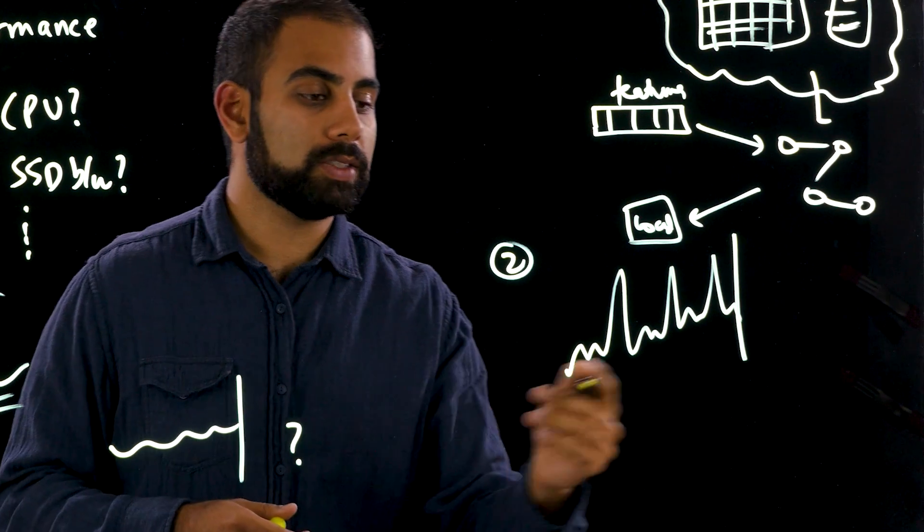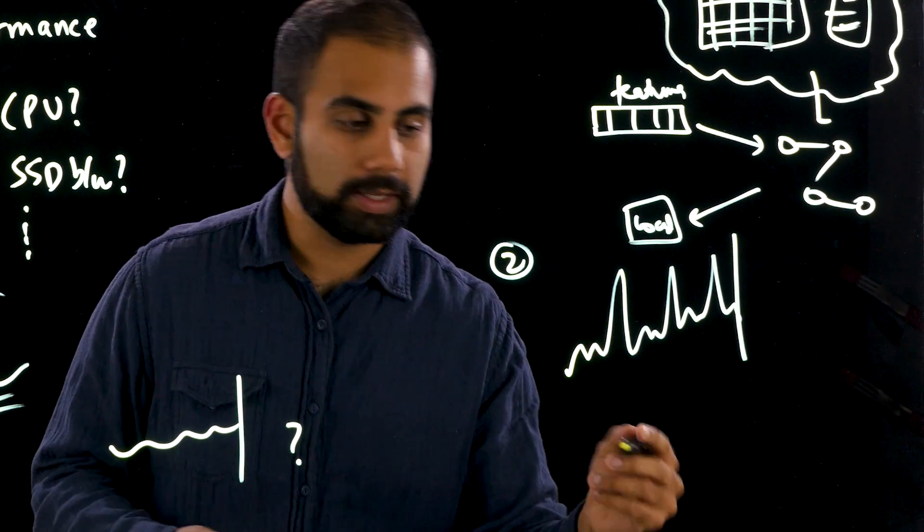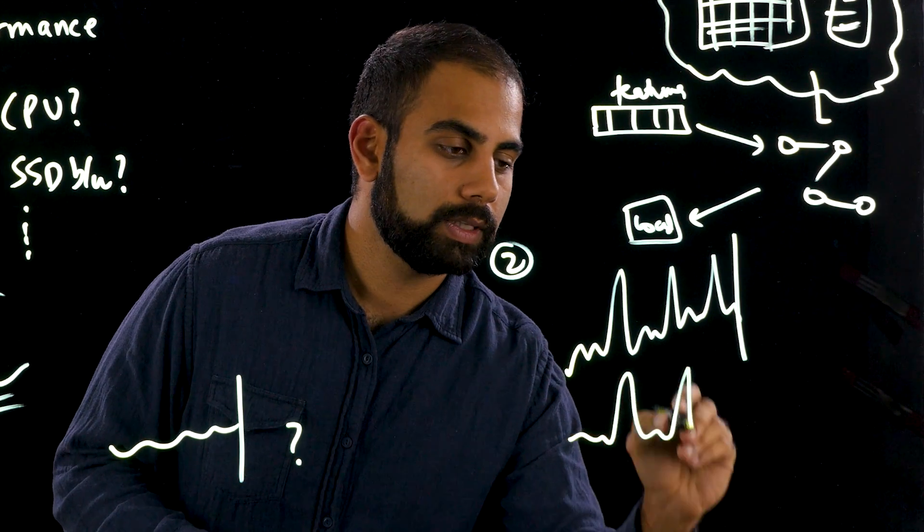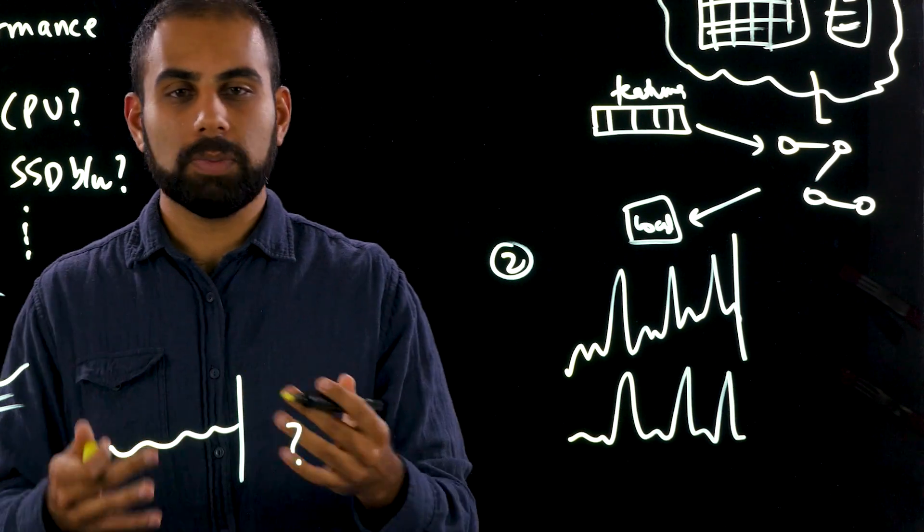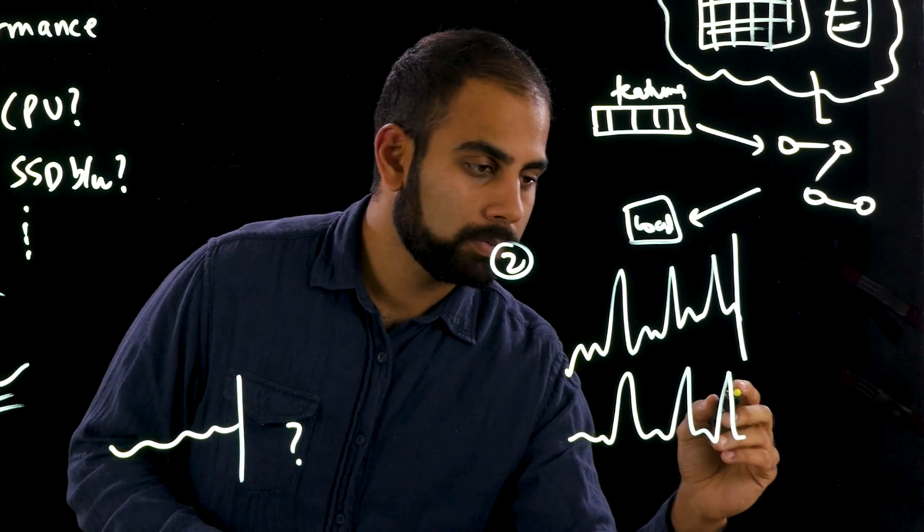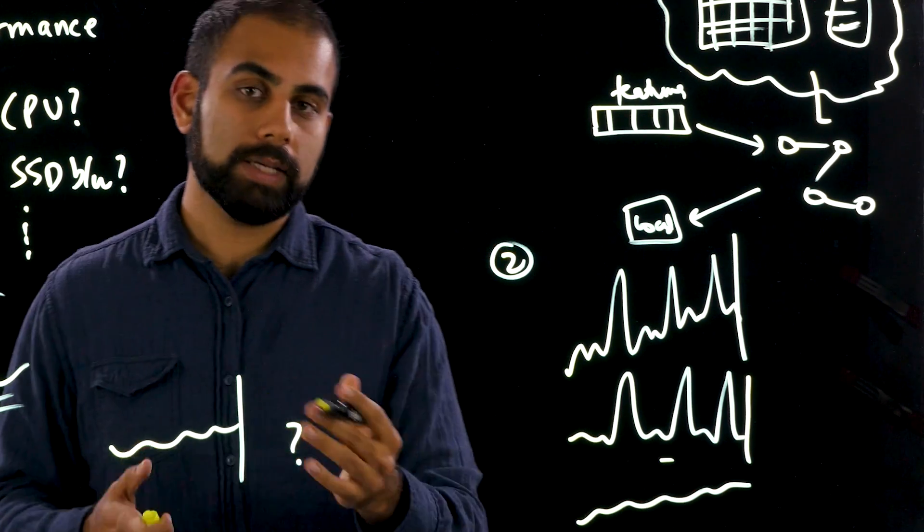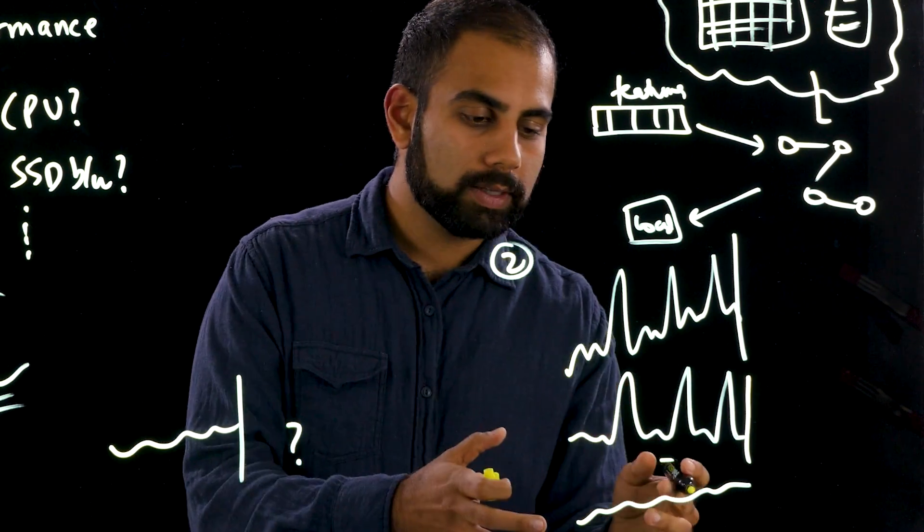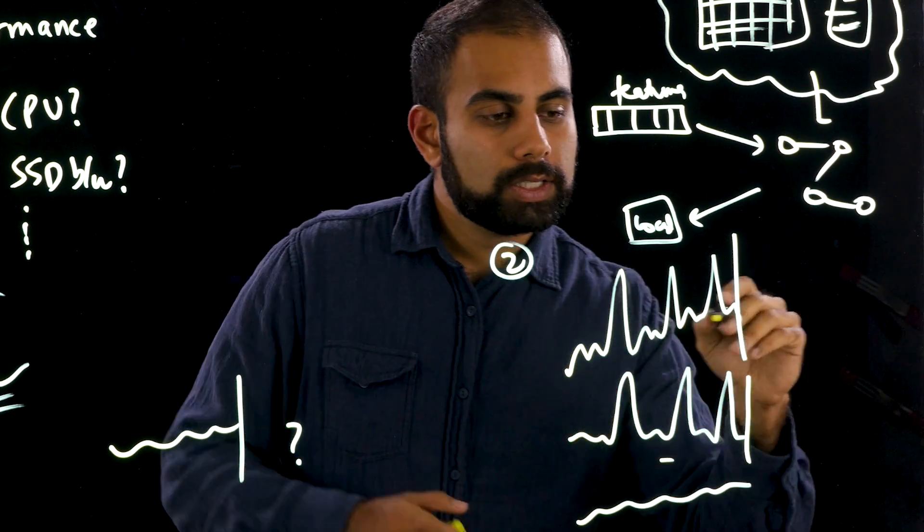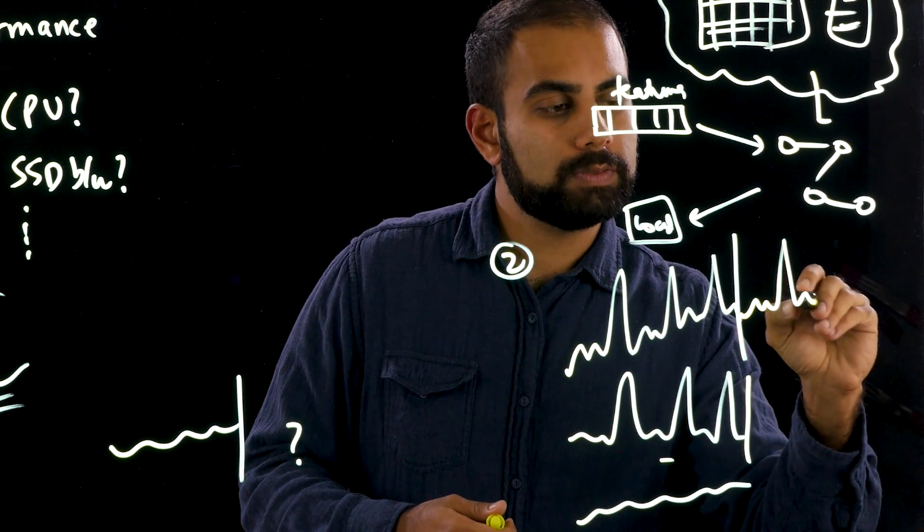These analyses include things like removing the seasonality at different frequencies. This includes weekly, monthly, daily trends. Once we remove these seasonalities, we find the underlying trend in this time series and use that, combined with the seasonalities, to project forward what this feature would look like.